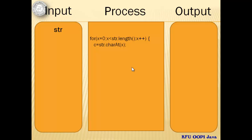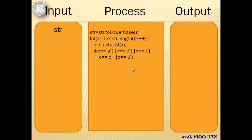Each letter will be assigned to variable C using the charAt method. This C variable will be compared to vowels A, E, I, O, U. So that we don't have to include the uppercase equivalent of the vowels, we will simply convert our original string to all lowercase. If a match is found, we will increment our counter. But we must not forget to initialize our counter to zero. Our output will be the counter CTR.